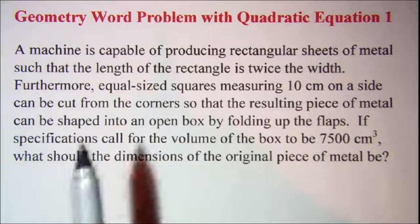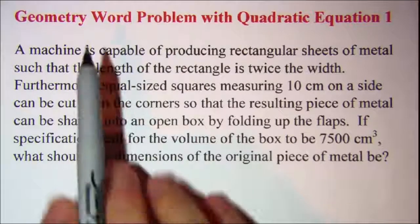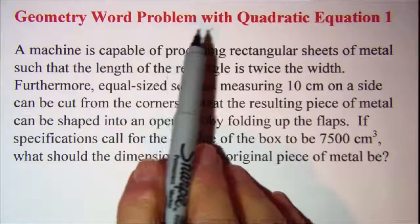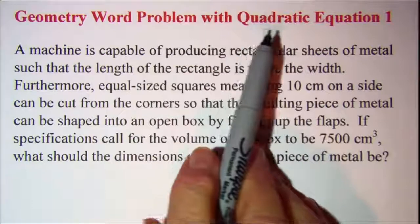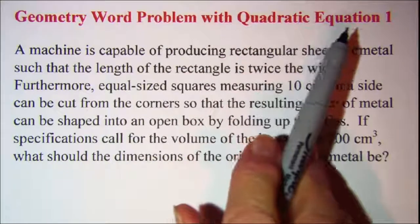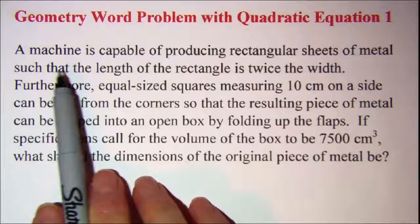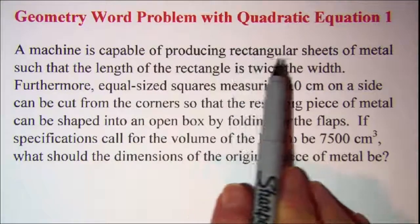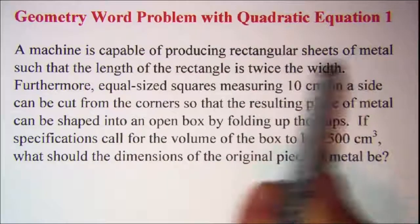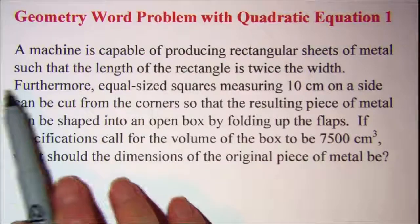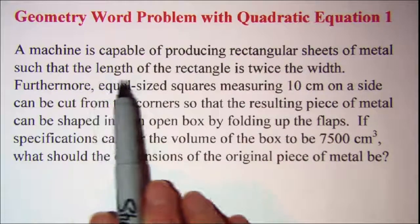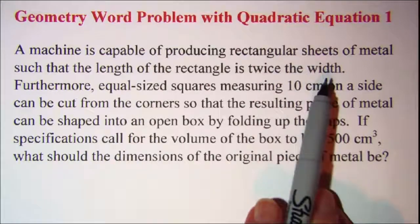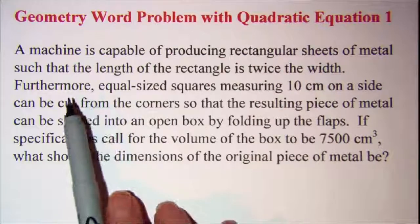In this video we'll be solving a geometry word problem that results in a quadratic equation. A machine is capable of producing rectangular sheets of metal such that the length of the rectangle is twice the width. Furthermore,